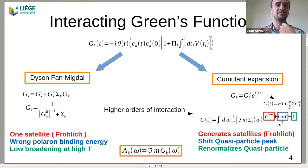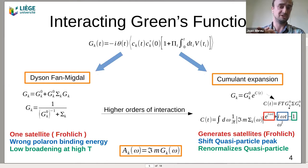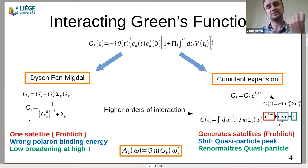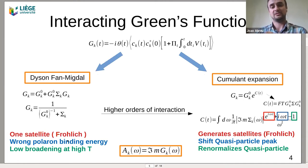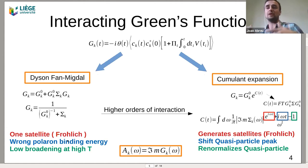Usually the self-energy is approximated to the lowest perturbation order, giving a simpler formula for the Green's function. However, this has a problem in the Frohlich model, which has only one electron band and one phonon. It shows only one satellite — one polaron — and the polaron has the wrong binding energy. At higher temperature, the broadening of the quasiparticle is also not accurate.